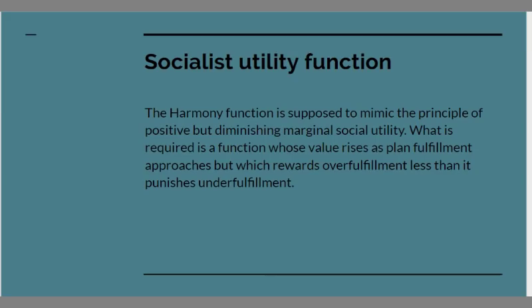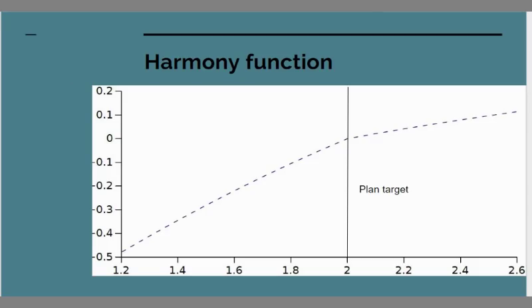The point about the harmony function is that it's a socialist utility function. It's designed to mimic the principle that you have positive but diminishing marginal social utility as you produce more of a good. What you want is a mathematical function whose value rises as planned fulfillment approaches but which rewards over fulfillment of the plan less than it punishes under fulfillment of the plan. Here is a plot of the shape of the harmony function as I use it in my current version of the software. I'm assuming that we have a planned target of producing two units of something. It could be two million units or two hundred thousand units but it's two of something.